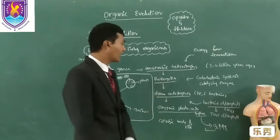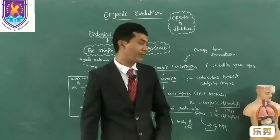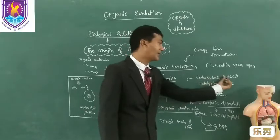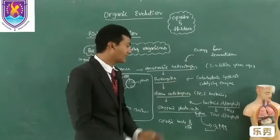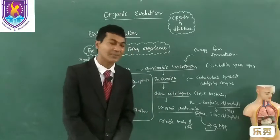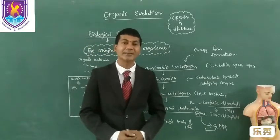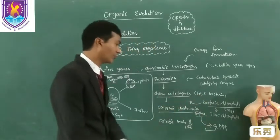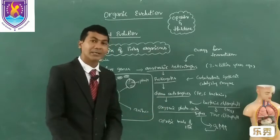These prokaryotes developed in the course of evolution. They developed an enzyme called Carbohydrate Synthesis Catalyzing Enzyme. Once this enzyme was formed in the prokaryotes, they became chemo-autotrophs, which were able to break down iron and sulphur to get energy. We believe iron and sulphur factors evolved from chemo-autotrophs.